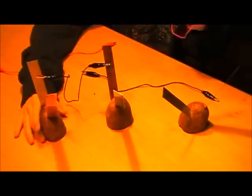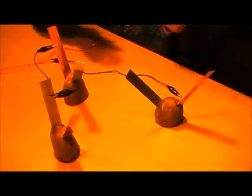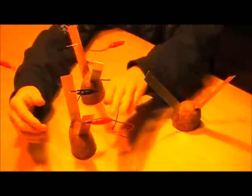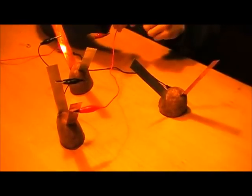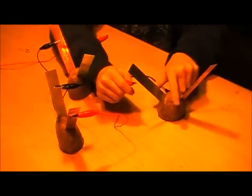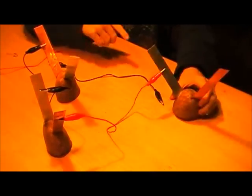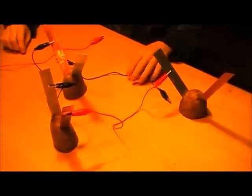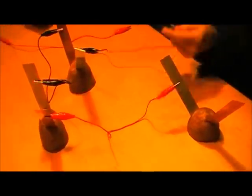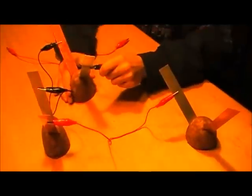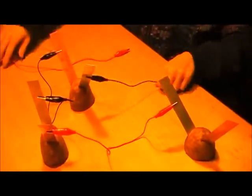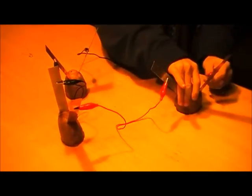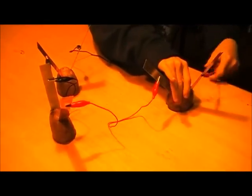Then you connect it to this copper electrode where you started with the black alligator clip and connect this to the zinc electrode on the other potato that the black clip wasn't on. Then you grab this and put it right here, and grab this and put that right there.